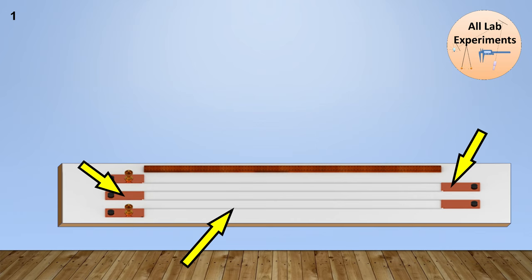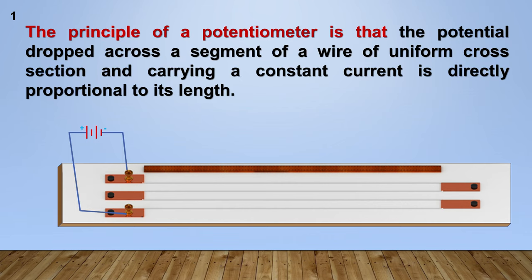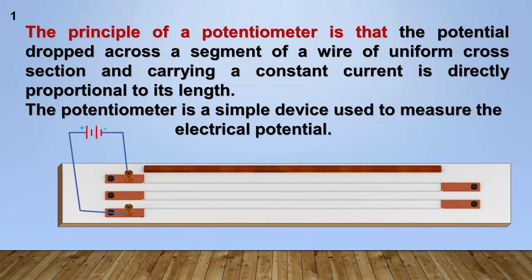If we connect a voltage across its terminals, the principle of a potentiometer is that the potential dropped across a segment of a wire of uniform cross-section and carrying a constant current is directly proportional to its length. Additionally, the potentiometer is a simple device used to measure the electrical potential.